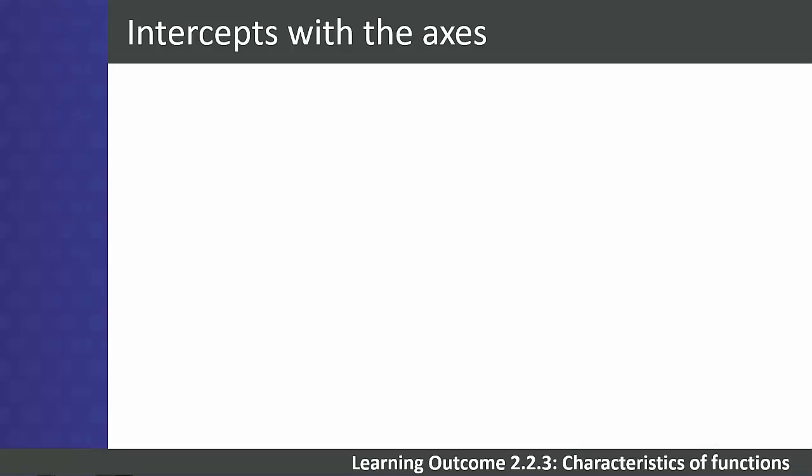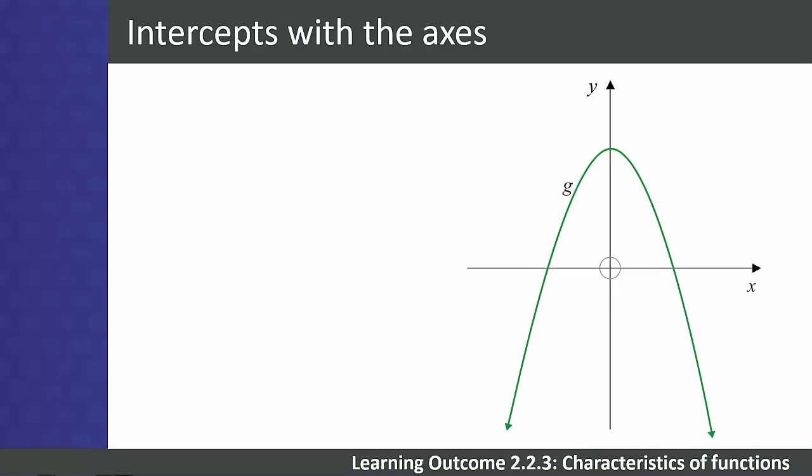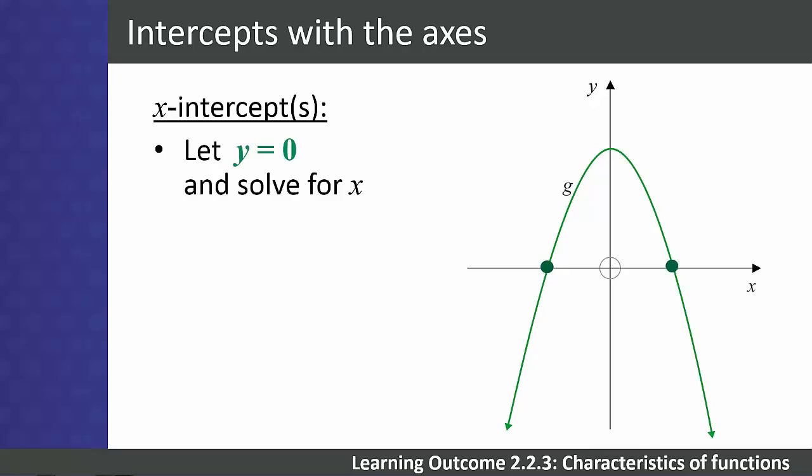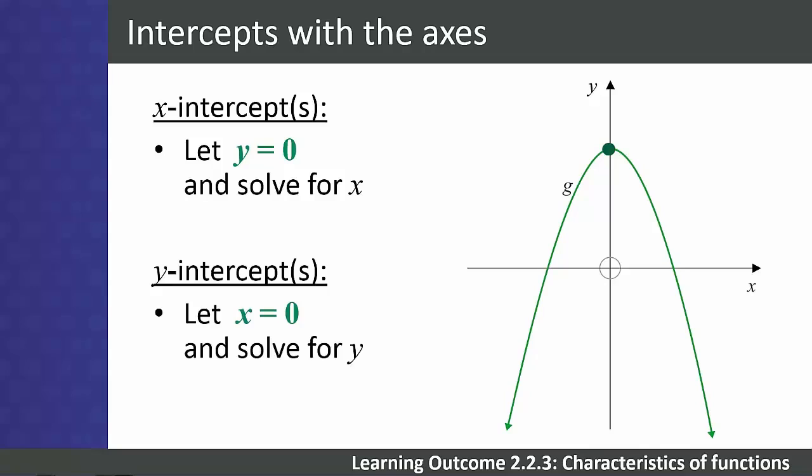Students need to give any intercepts with the axes when describing functions. The x-intercept occurs where y = 0, so substitute zero for y and solve for x. Similarly, the y-intercept occurs where x = 0, so substitute zero for x and solve for y. The intercept can often be seen from the equation or read off a graph, but sometimes requires manipulation.